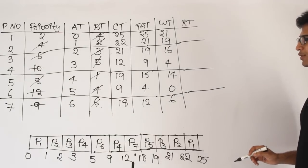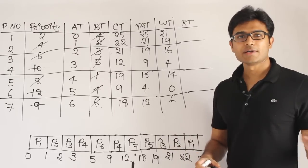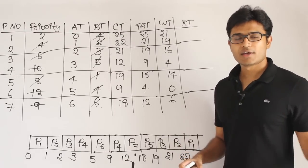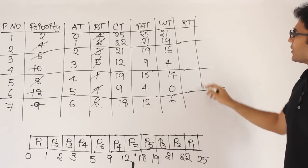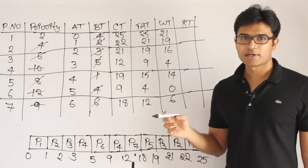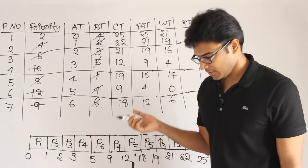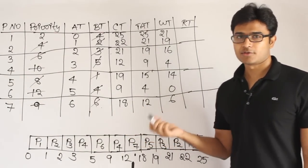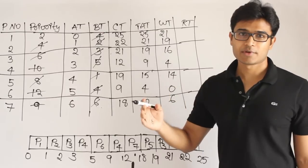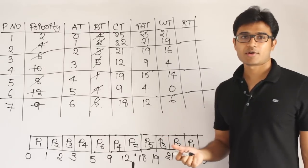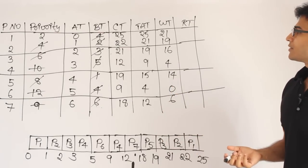Notice that only the process with highest priority — P6 — has a waiting time of 0. Whenever you have the highest priority process, it gets first priority immediately upon arrival and finishes before others execute. That is why only P6 gets waiting time 0. In the preemptive version, the highest-priority process always gets waiting time 0. In the non-preemptive version it might not, because if another process is already running we don't stop it.